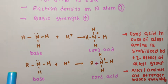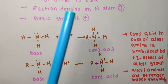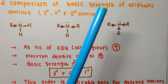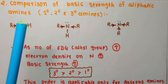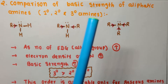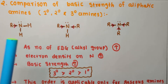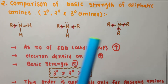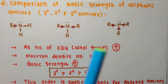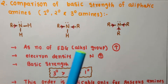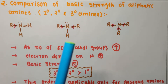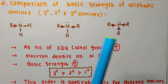You can justify the answer either by discussing electron density on nitrogen atom or by the stability of the conjugate acid. Now let us compare the basic strength of primary, secondary, and tertiary aliphatic amines. As we move from primary to secondary to tertiary amine, the number of electron donating alkyl groups increases — one in primary, two in secondary, and three in tertiary amine.